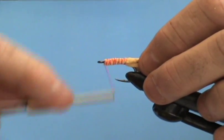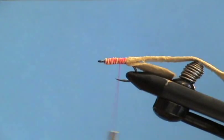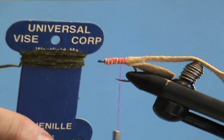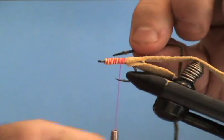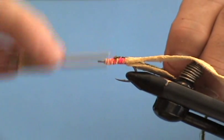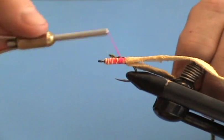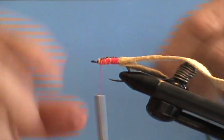Next thing I'm going to do is put a head on. I'm going to use some chenille here, dark olive, and I'm going to tie this on and wrap it forward to create the head section on the cinder worm, which is usually darker than the rest of the body.